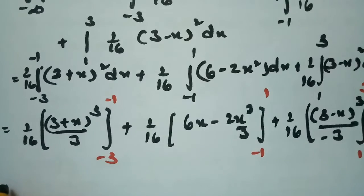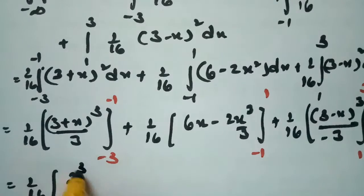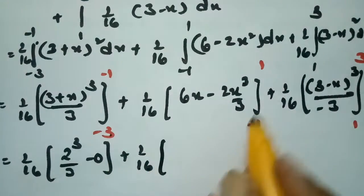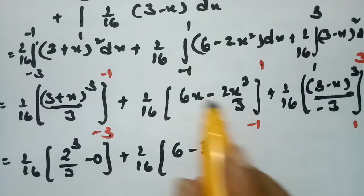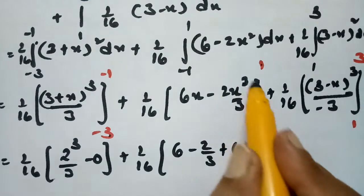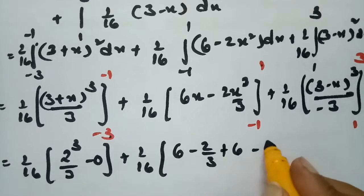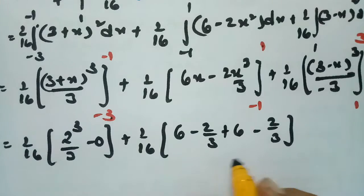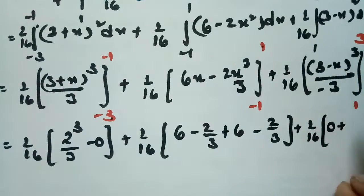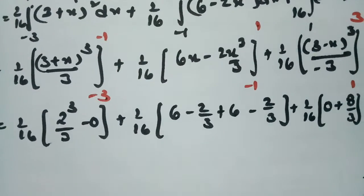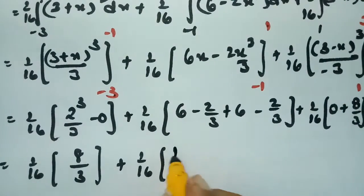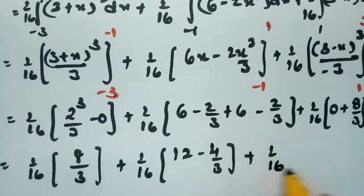Substituting the limits: for the first integral, upper limit gives (3 + (-1))³/3 = 2³/3 = 8/3, and lower limit gives (3 + (-3))³/3 = 0. So the first piece gives (1/16)(8/3). For the third integral, substituting 3 gives 0 and substituting 1 gives (3-1)³/3 = 8/3, so the third piece gives (1/16)(8/3).